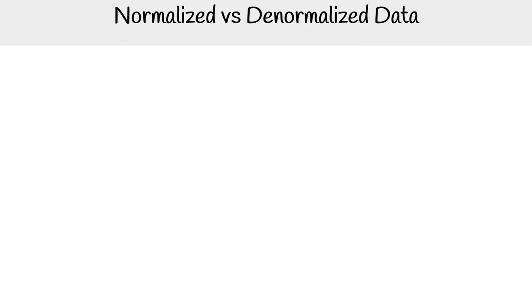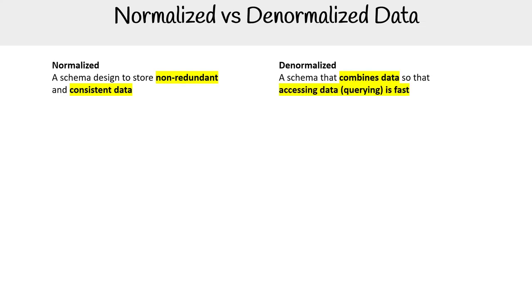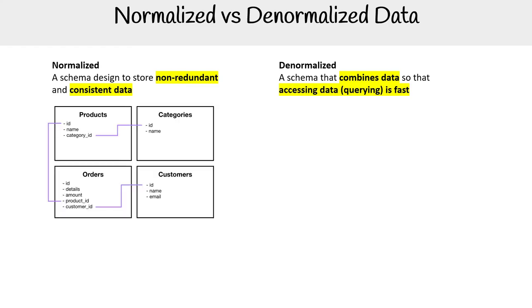It's time to compare normalized versus denormalized data. Normalized is a schema designed to store non-redundant and consistent data, whereas denormalized is a schema that combines data so that accessing data or querying it is very, very fast.